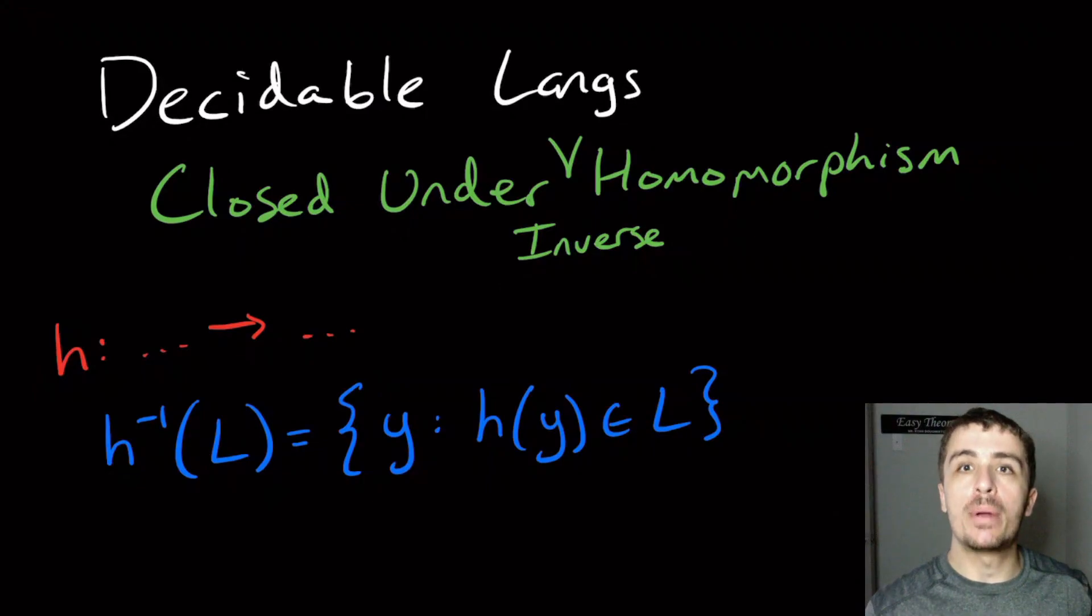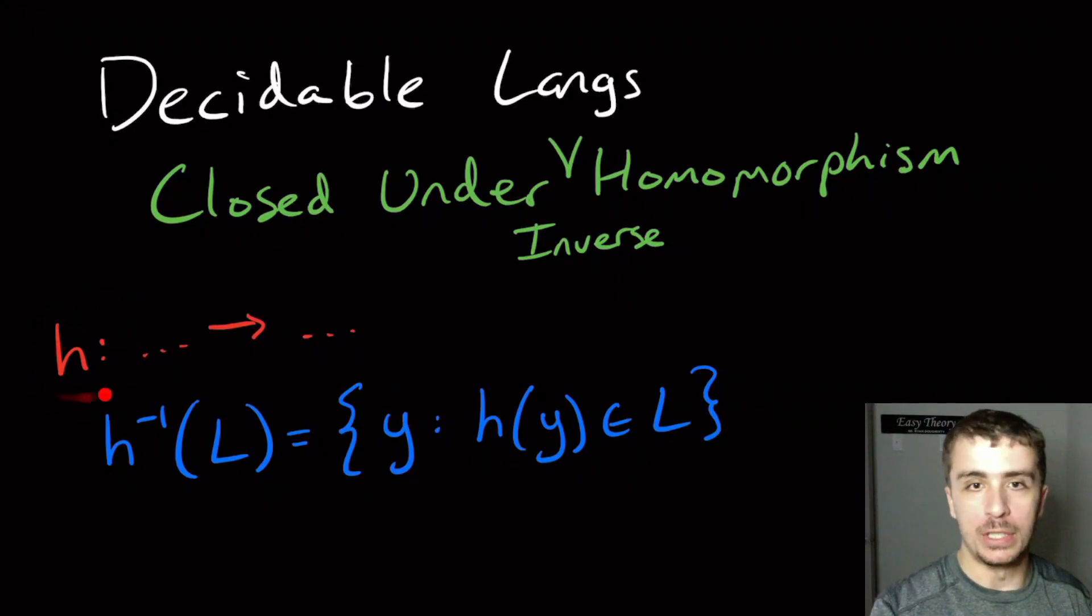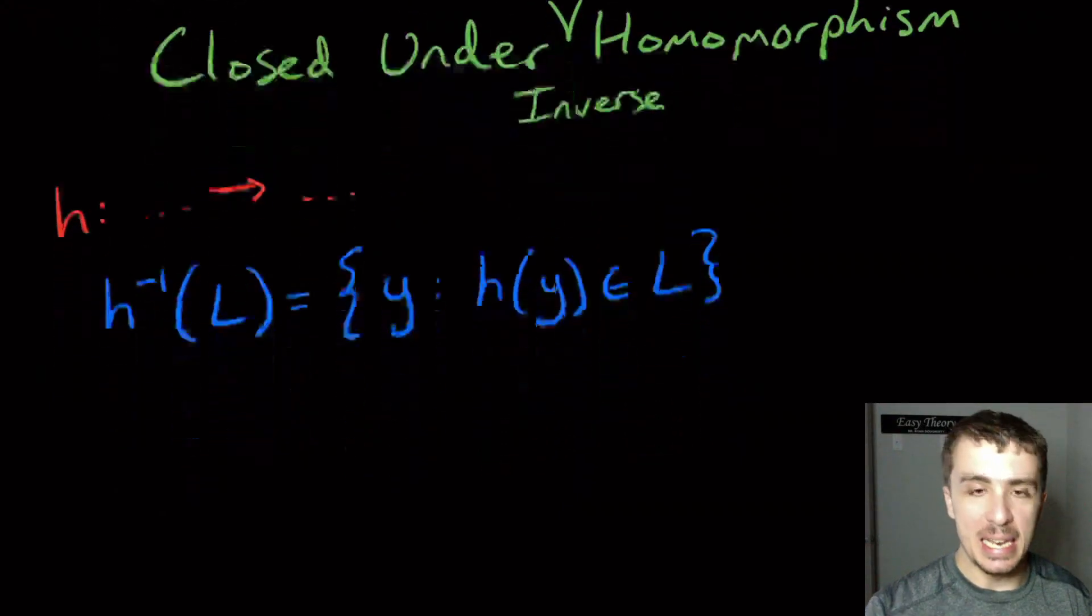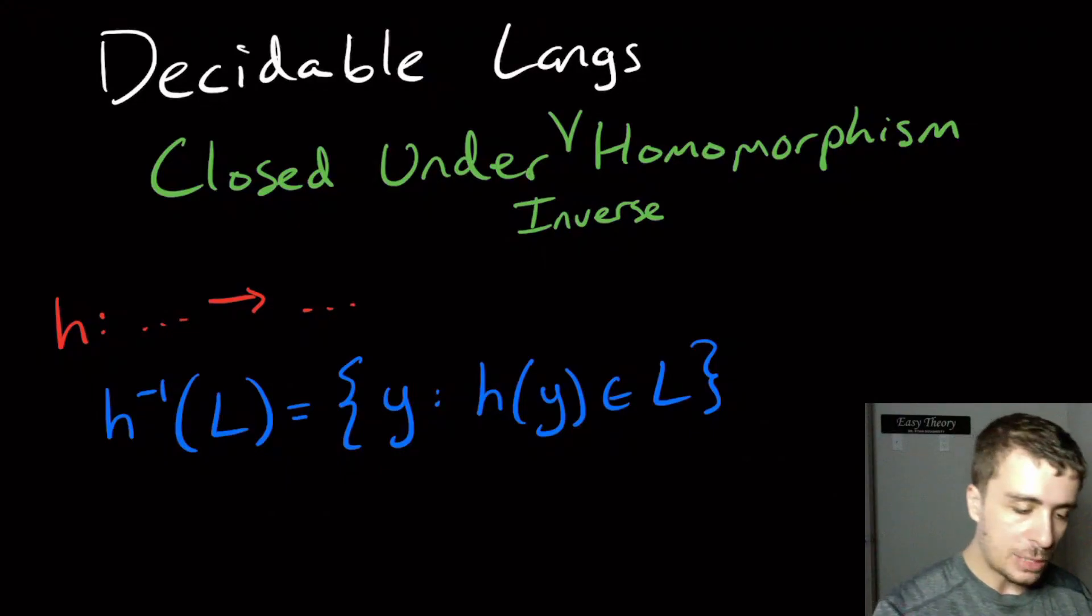Okay, let's prove that the decidable languages are closed under inverse homomorphism. So let's suppose that we have a homomorphism right here, which is going from some set to some other set. And the inverse homomorphism is all of the strings such that the homomorphism applied to those strings is in L. So let's try to visualize what's going on here.